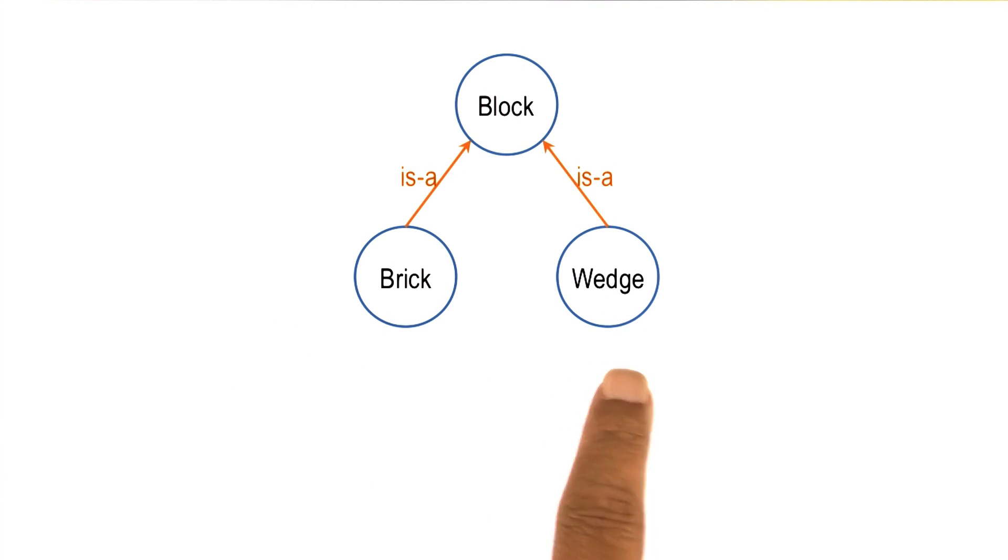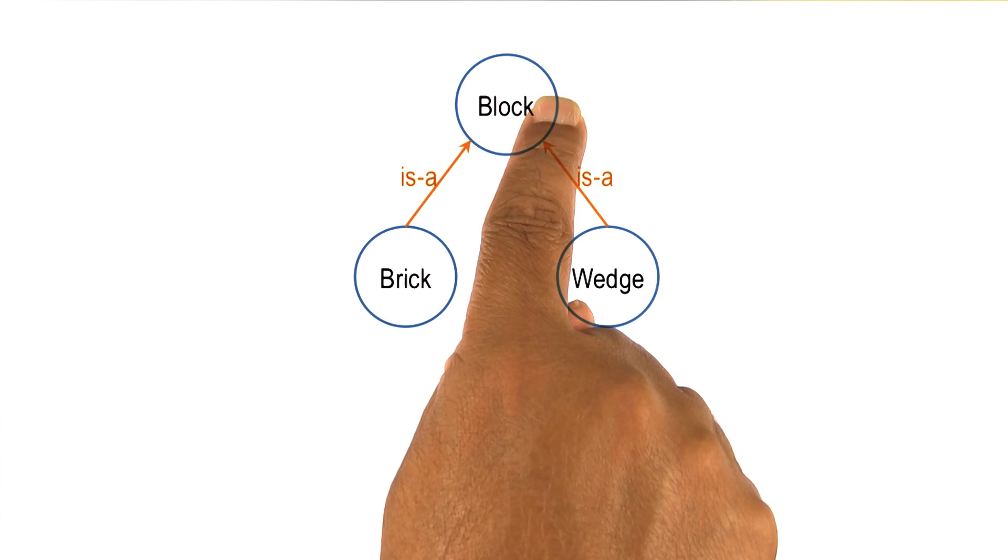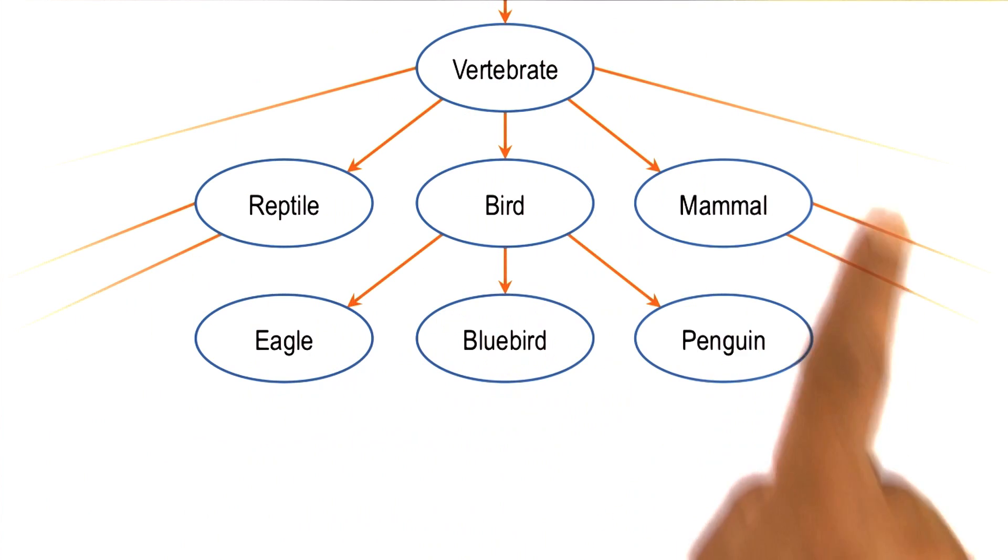I just talked about the organization of concepts and the relationship of concepts with each other. We already came across this when we were talking about background knowledge in the previous lesson on incremental concept learning. We had a brick and a wedge, they were both subclasses of a block. In general, the organization of concepts can be much more complex.